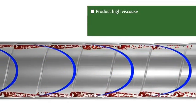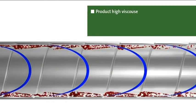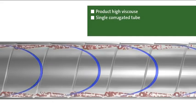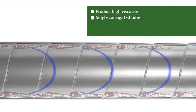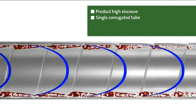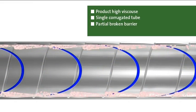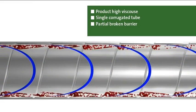Now we're looking at a high-viscous product in a single corrugated tube. The design of this tube causes the laminar layer to break up, thus producing a moderate heat transfer because the turbulences are not strong enough.